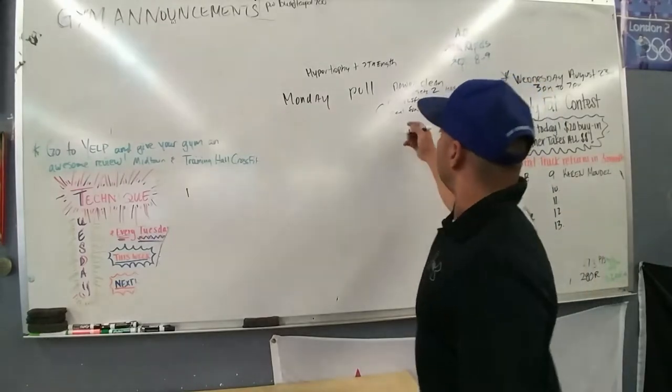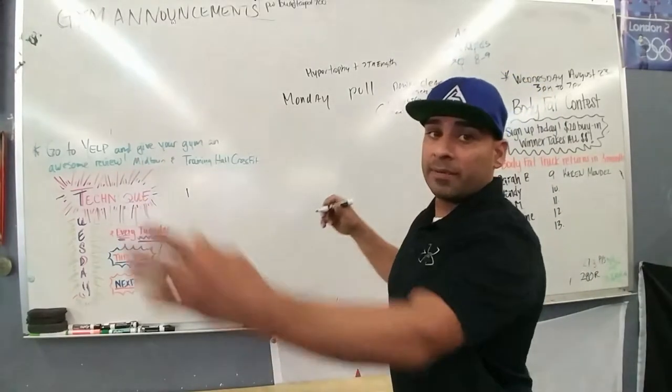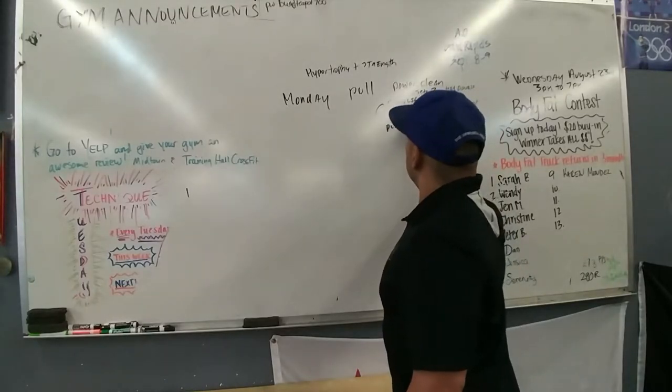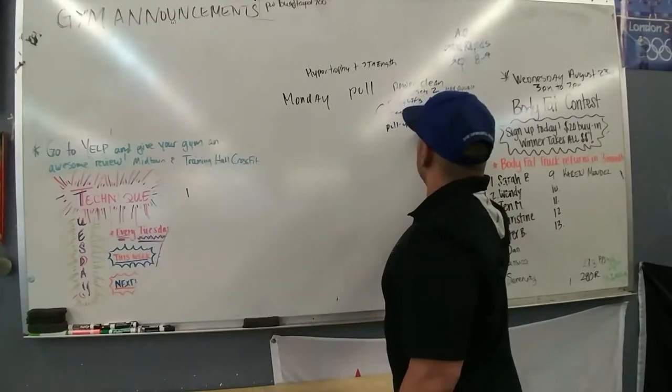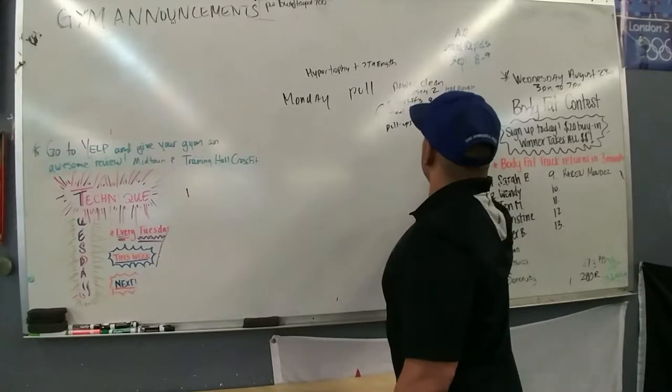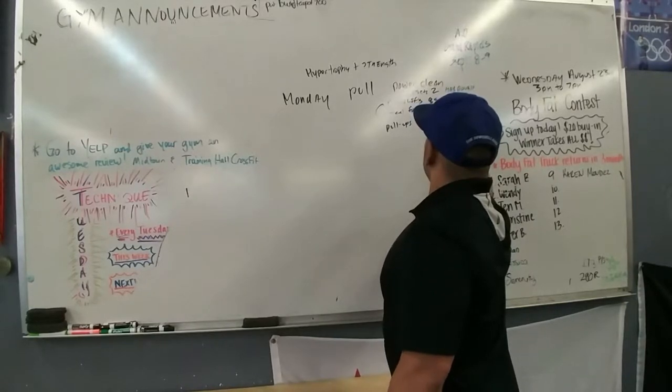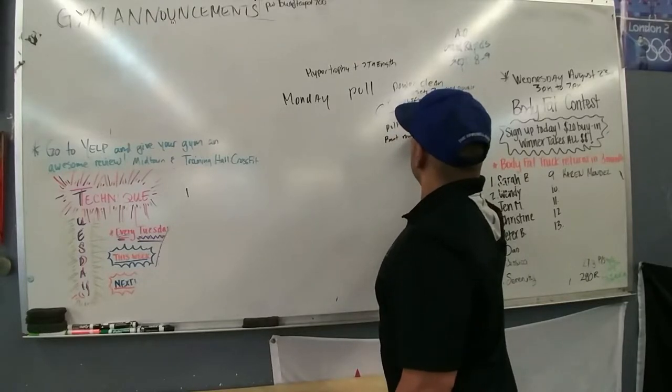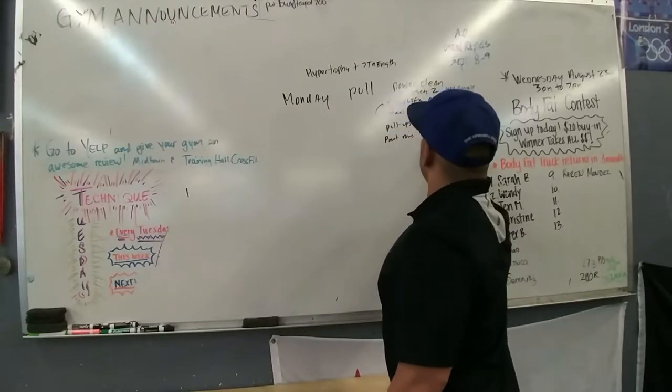So deadlifts and then we'll go, we want to do some pulling. So think of it as a pulling right here. I'm going to do some pull-ups, maybe four times 10, weighted, weighted, bent rows, bent rows, three sets of 12.